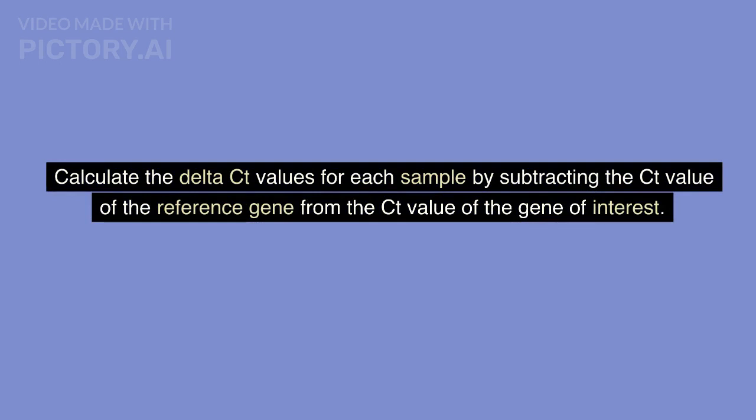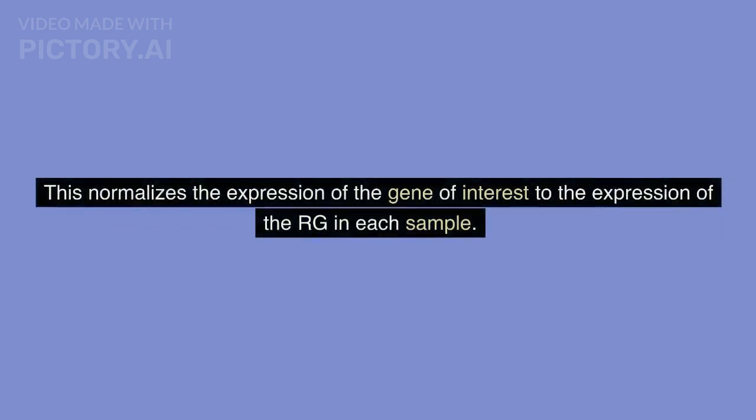Calculate the ΔCT values for each sample by subtracting the CT value of the reference gene from the CT value of the gene of interest. This normalizes the expression of the gene of interest to the expression of the reference gene in each sample.